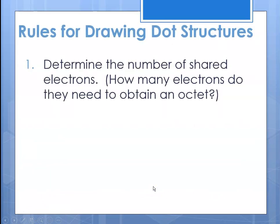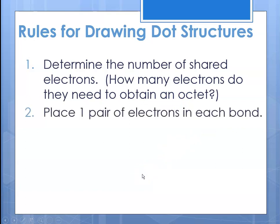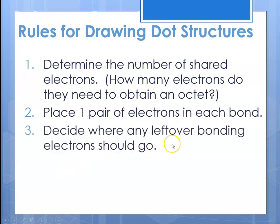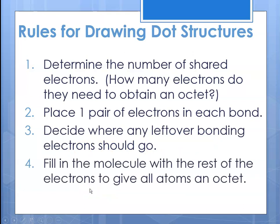To draw a Lewis dot structure, you determine how many shared electrons two atoms would need and figure out how many more they need to obtain an octet. Then place the electrons in each bond — for example, for hydrogen you would show one pair of electrons between the two hydrogens — and fill in the rest to give every atom an octet. We will be doing a worksheet that demonstrates how to do these diagrams. This is Ms. Augustine signing off.